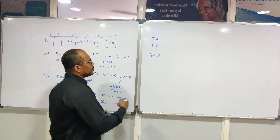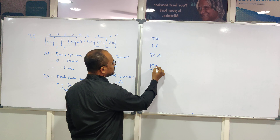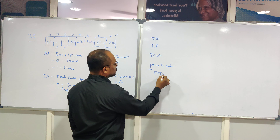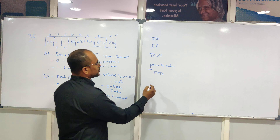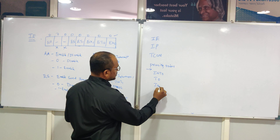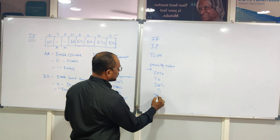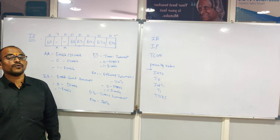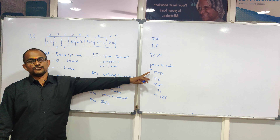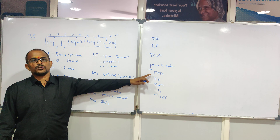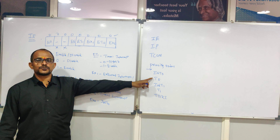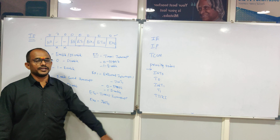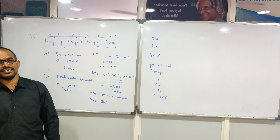Out of the 5 programmable interrupts, the default priority order is: INT0 has the first priority, followed by Timer 0, then INT1, then Timer 1, and finally the serial interrupt (TI or RI).